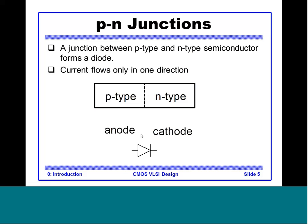The most fundamental circuit built from P-type and N-type devices is a diode — a junction between P-type and N-type semiconductor. Current flows only in one direction: electrons flow from N to P, so conventional current flows from P to N. P acts as the anode and N-type as the cathode. The key point is that current can only flow in one direction, from P to N.